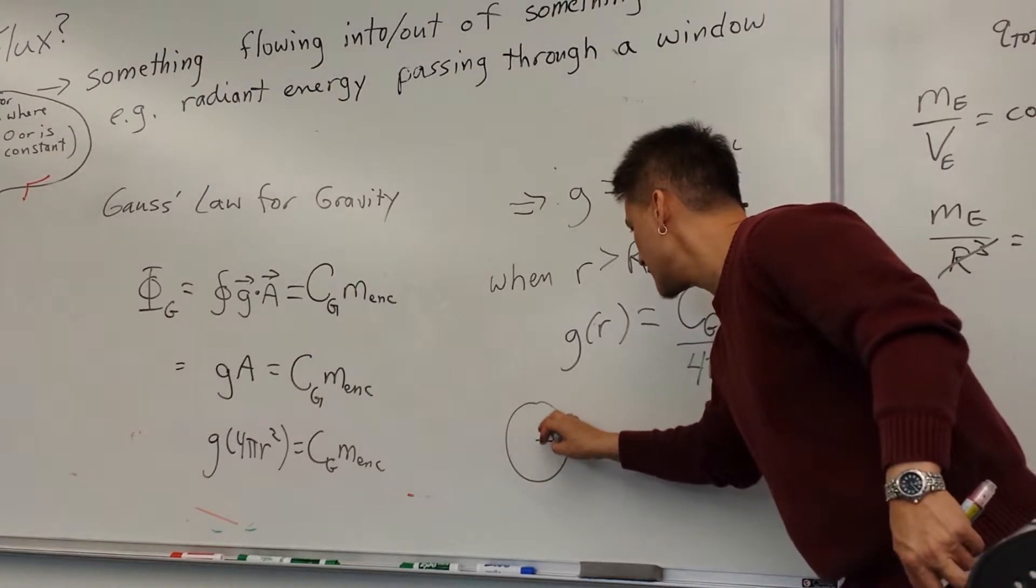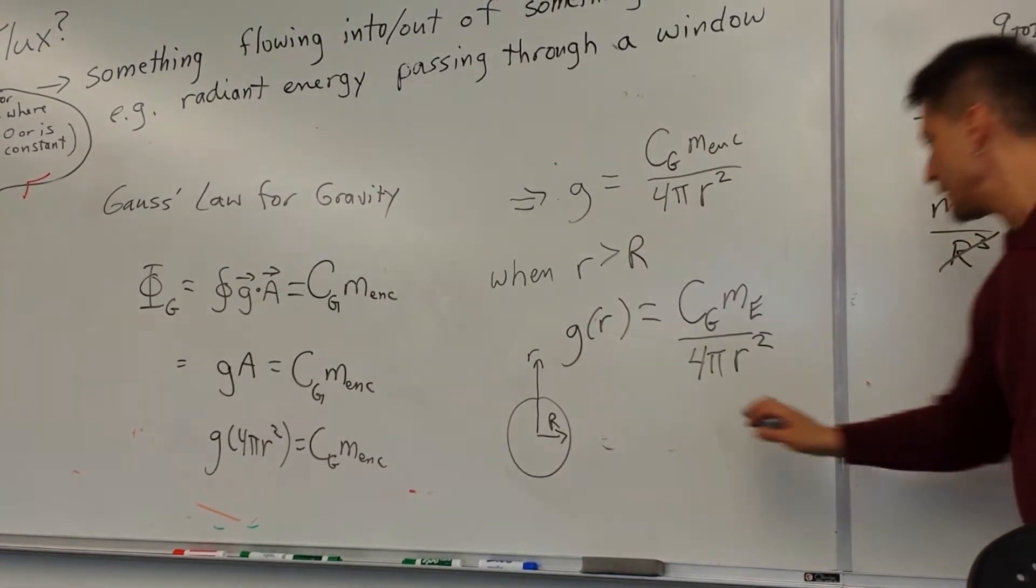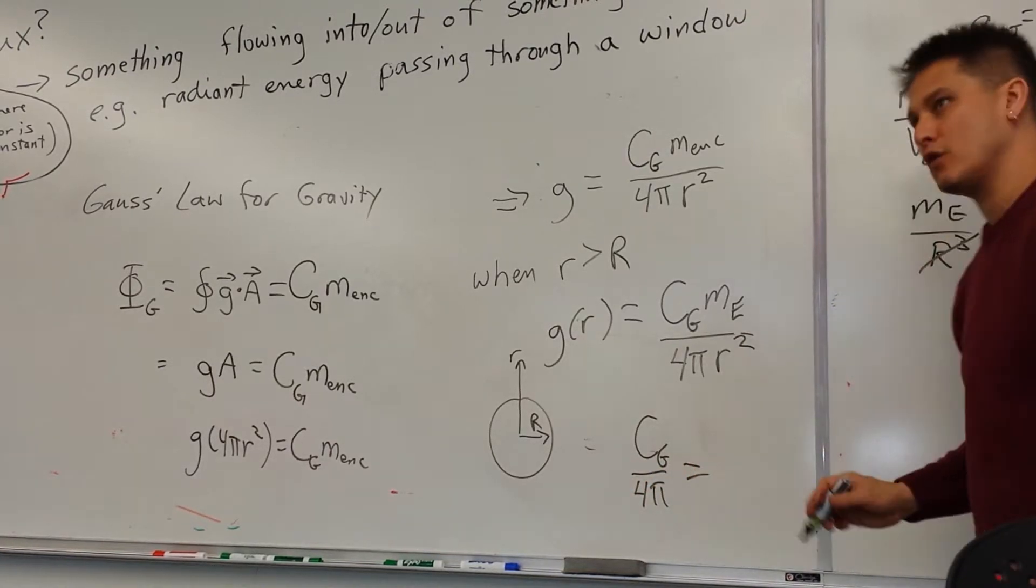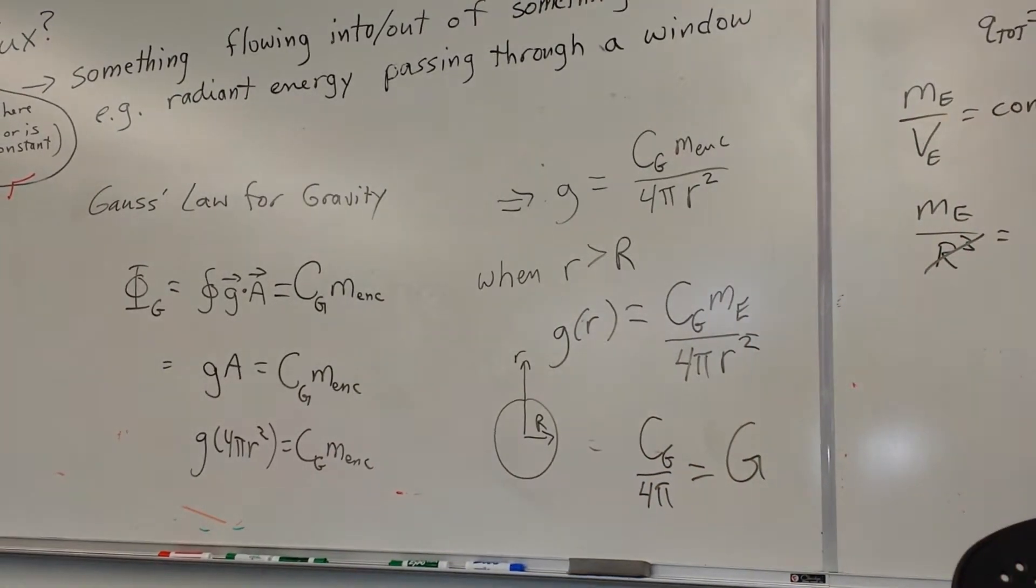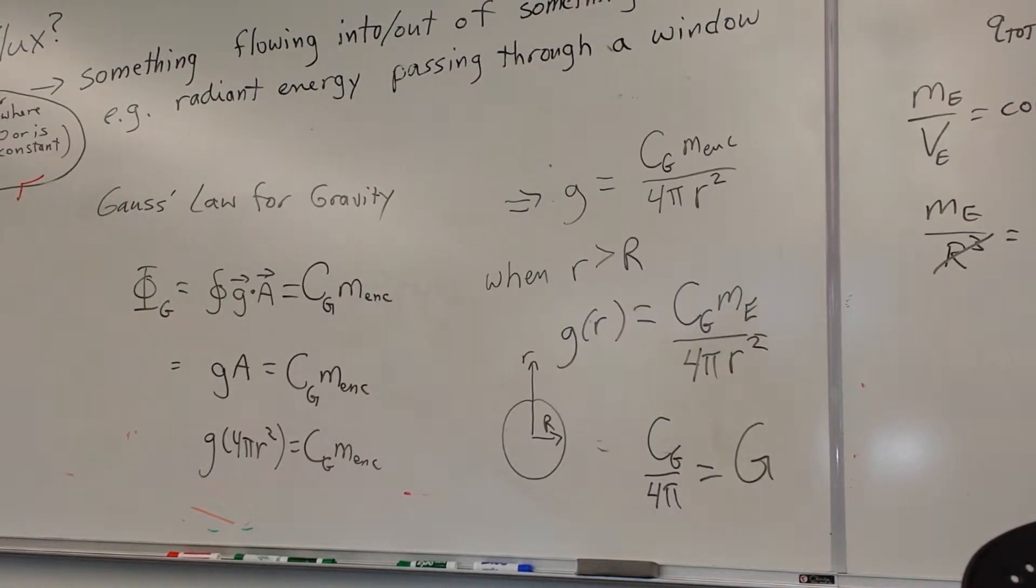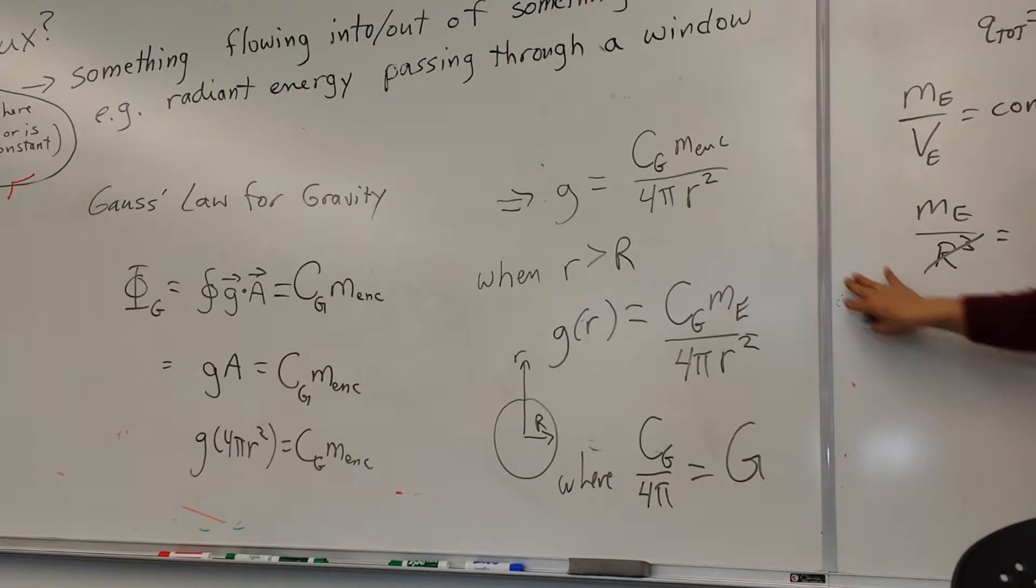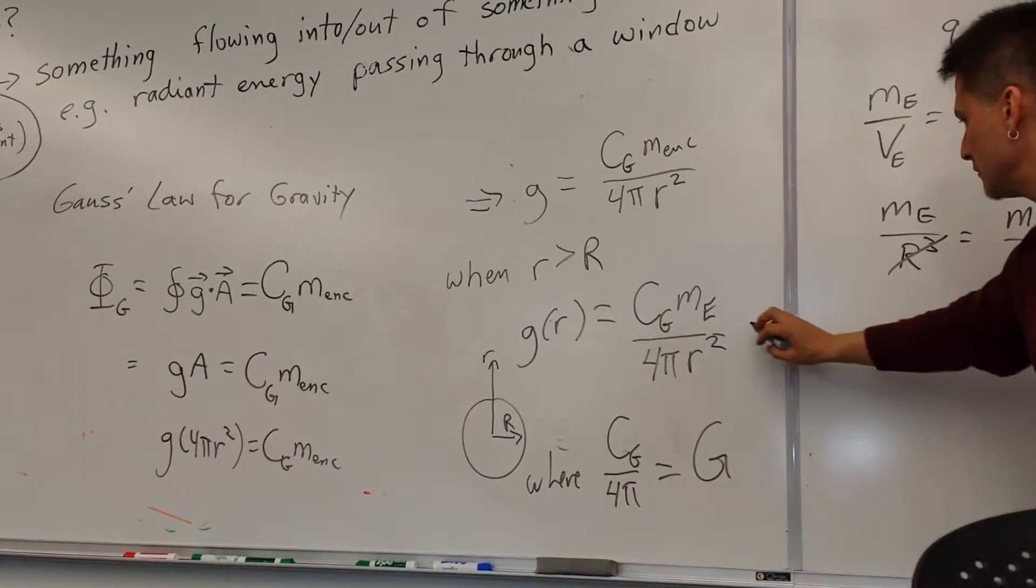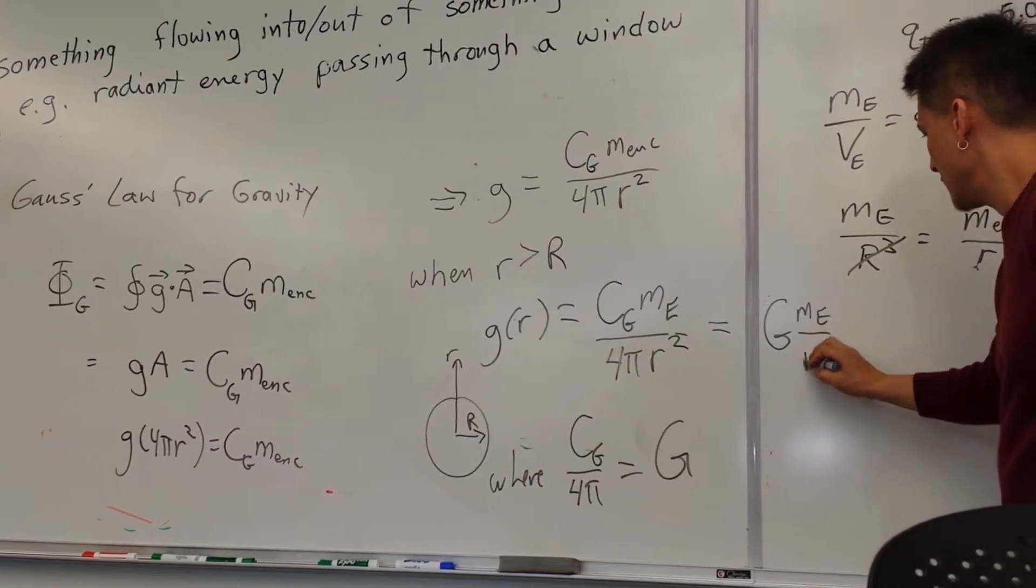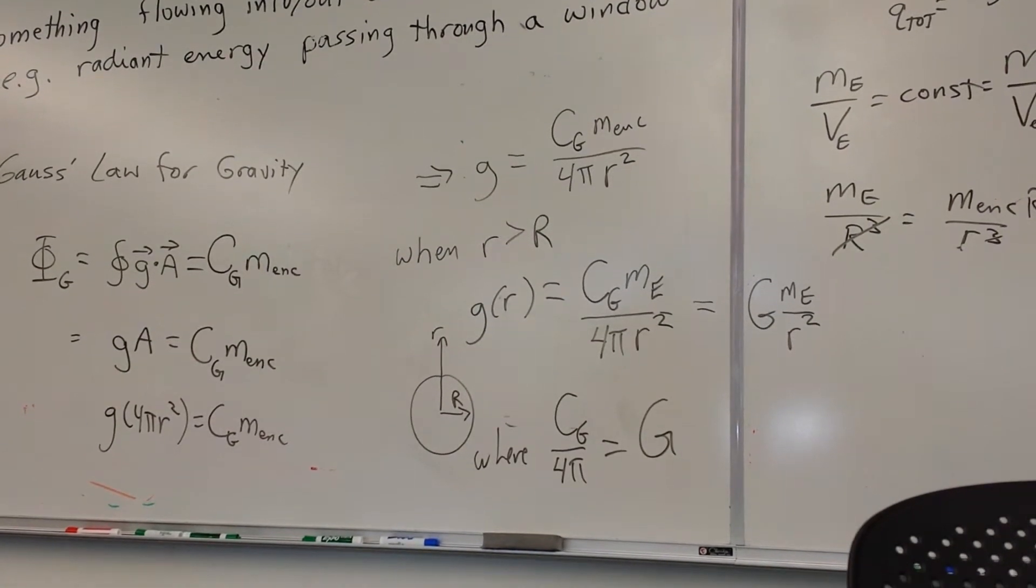So this is a case where this has a radius of R, but we're looking at some distance R out here. And this implies that whatever this constant is, if I take that constant C over 4π, that should be equal to this G value. So we can express this as G M_E over R². So that's all fine and good.